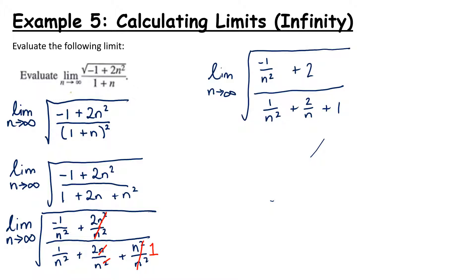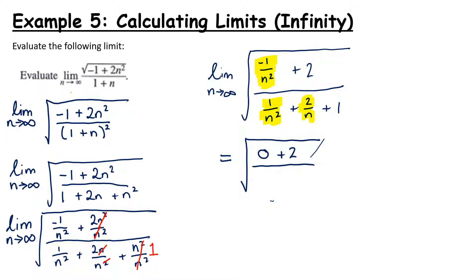So we get the limit as n goes to infinity of the square root of (minus 1 over n squared plus 2), all over 1 over n squared plus 2 over n plus 1. Just like before, any fraction with n in the denominator goes to 0. Minus 1 over n squared also goes to 0. So the limit is the square root of 0 plus 2, all over 0 plus 0 plus 1, giving us the square root of 2.